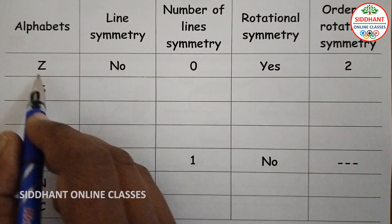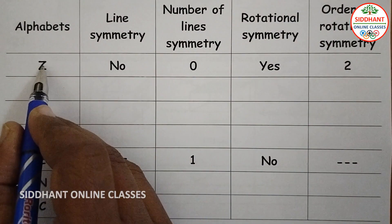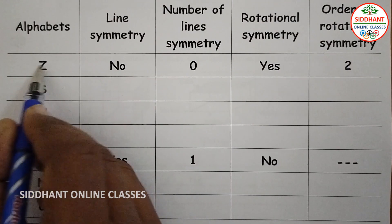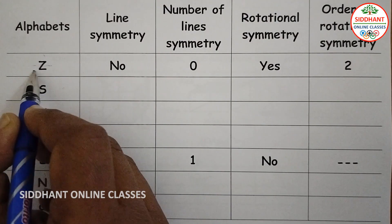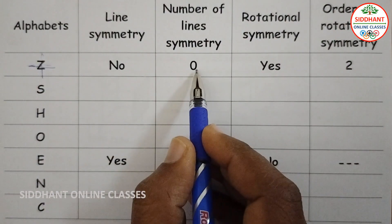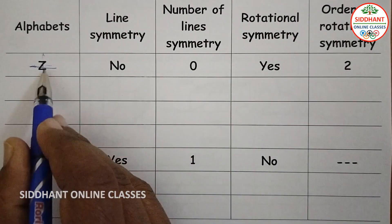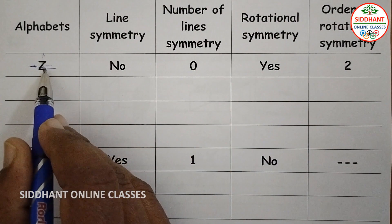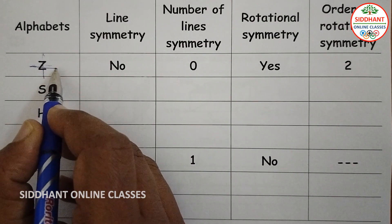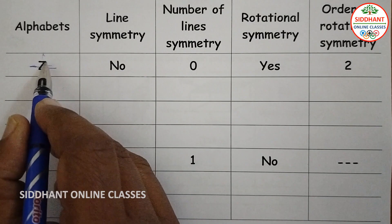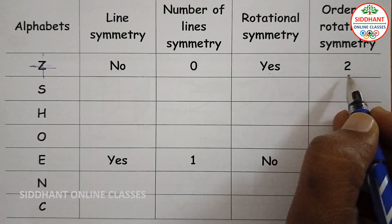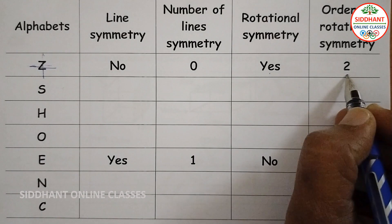First, the letter Z. There is no line of symmetry — if you cut it horizontally or vertically you won't get any symmetry. So the number of lines is 0. Rotational symmetry is also not straightforward — when you rotate 90 degrees you get a match again at another 90. So rotational symmetry is Yes, and the order of rotational symmetry is 2.